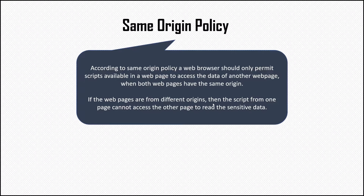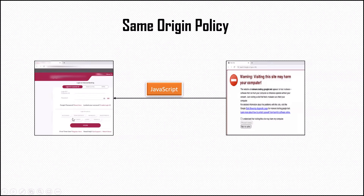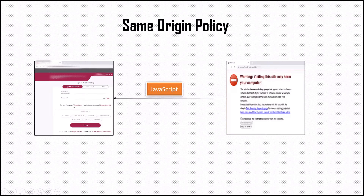If this policy didn't exist, then anyone could read the sensitive information of a web page by running JavaScript from another web page. For example, if you have a web application open like your banking application, and meanwhile you open another web page in the next tab to look for some information online, and you land on a web page with malicious scripts used by hackers — the moment you click any link or button on that malicious web page, the hacker can run their JavaScript to fetch the details of your bank account, because you have it open in another tab. This information can then be used by hackers to hack your bank account. Because of this security threat, the same origin policy was introduced, so that scripts cannot be run across different origins.